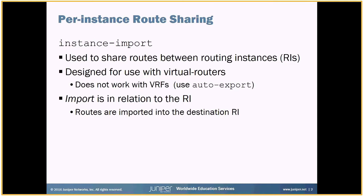When we talk about import in this case, we're talking in relation to the routing instances. So if you think of a source routing instance sharing its routes with a destination routing instance, instance import is used on the destination side. It imports those source routing instance routes into the destination. This is per-instance route sharing, so you're essentially getting all of the routes from each instance when you use this sharing mechanism.